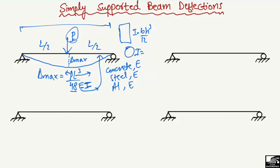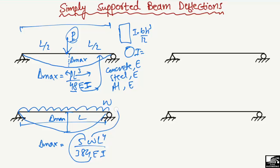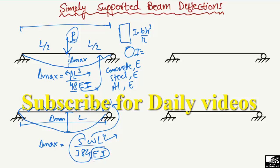The second case is when there is a uniformly distributed load W acting over the entire length L of the beam. The maximum deflection also occurs at the midpoint. In this case: δ_max = 5WL⁴ / (384EI), where 5/384 is the constant, W is the uniformly distributed load, L is the total length, and EI is the flexural stiffness of the beam.